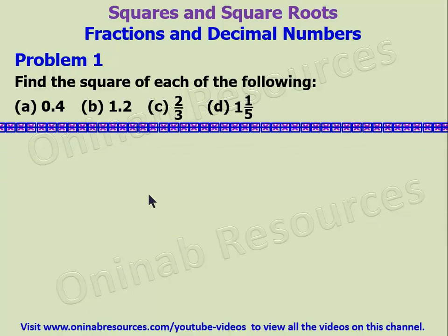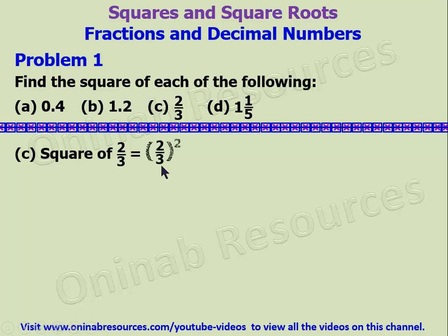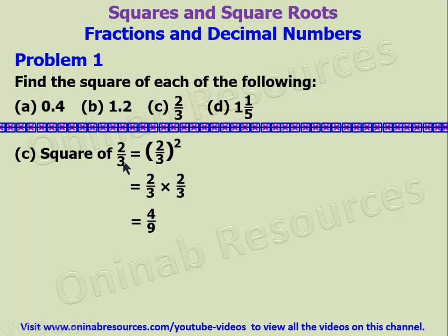We go to C. The square of 2 over 3 is equal to 2 over 3 squared, which means 2 over 3 times 2 over 3. 2 times 2 gives 4, and 3 times 3 gives 9. So the square of 2 over 3 is 4 over 9.